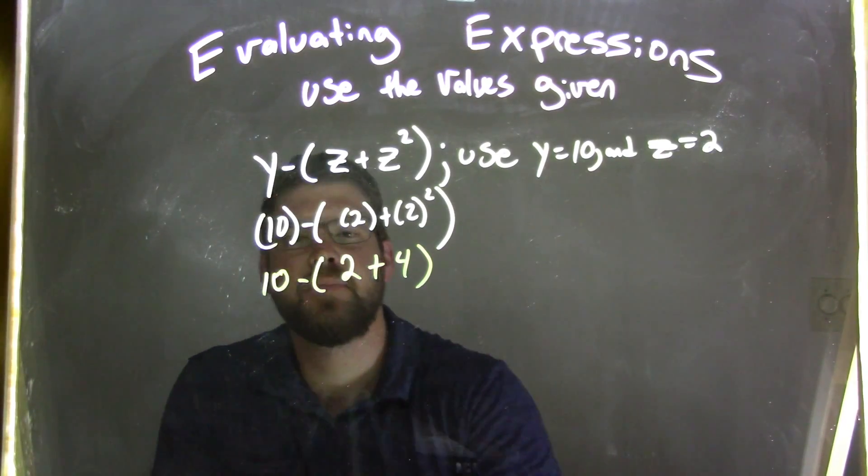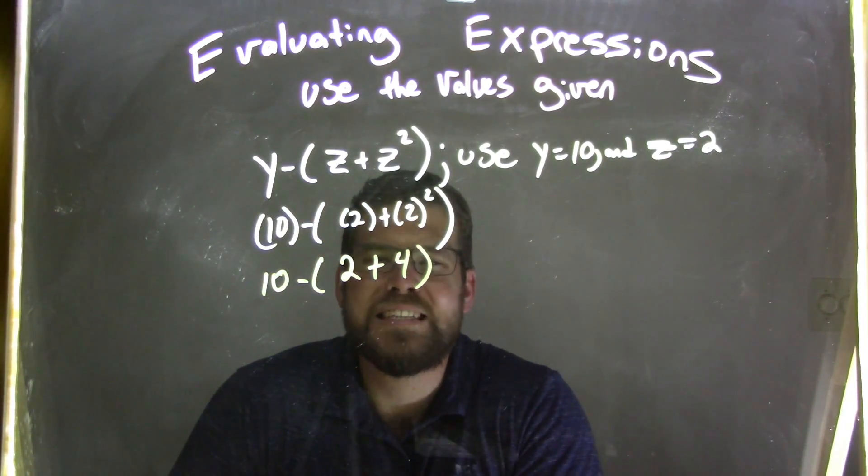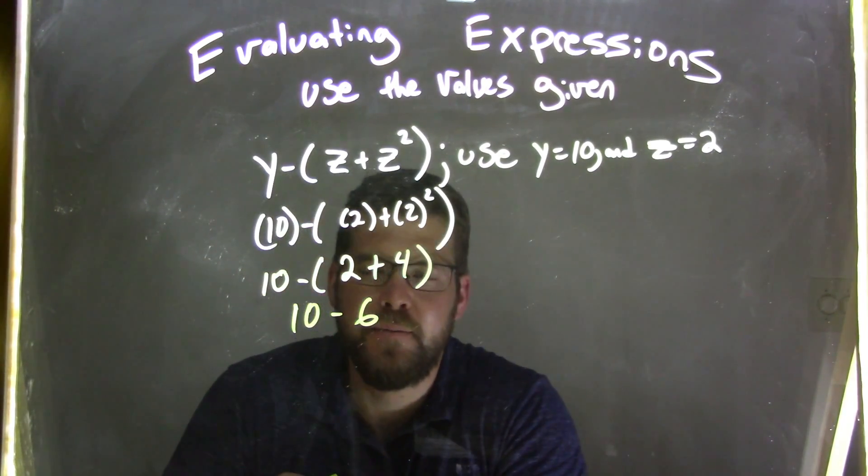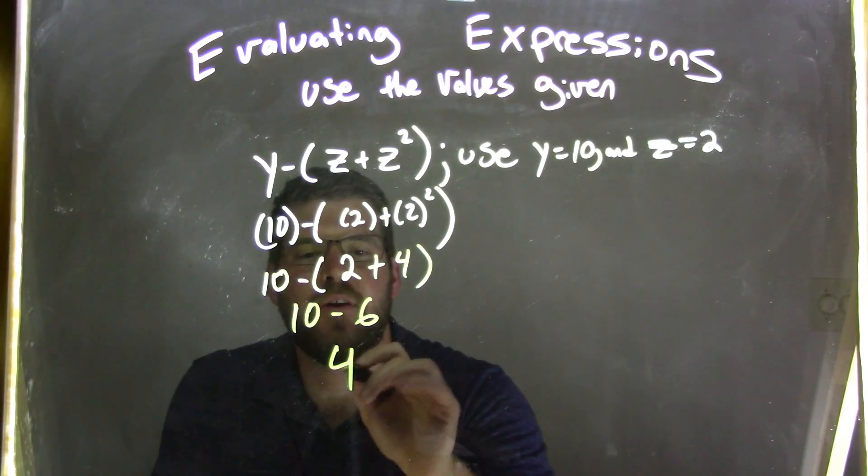10 on the outside, subtraction. And now we have 2 plus 4, which is 6. So we have 10 minus 6 here at the end, and 10 minus 6 is 4.